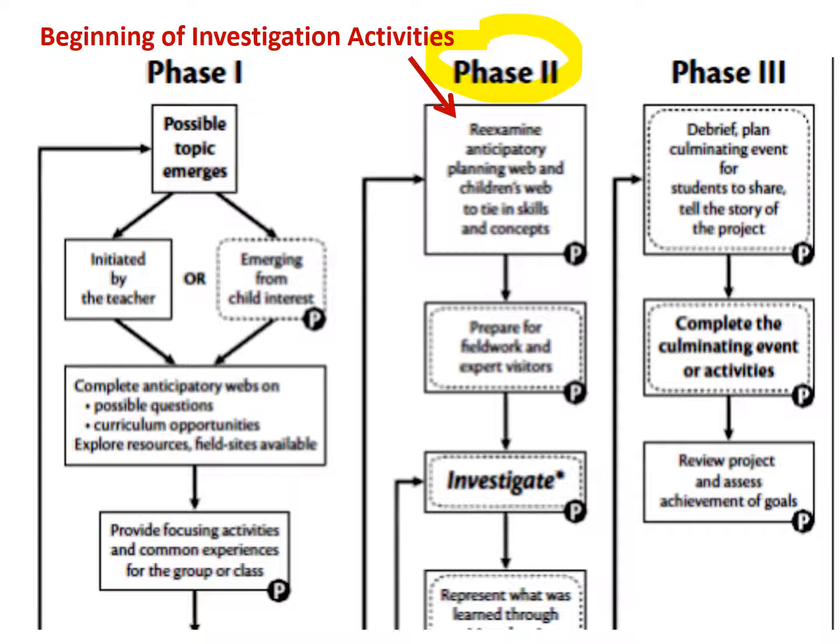I'm going to encourage you to think about the ways that children can investigate. When you explored the Illinois Early Learning Project website, there were multiple examples of projects, and I would encourage you to review those with the lens of looking for how children investigate. What kind of surveys did they do? What kind of observational drawings? What kinds of interactions did they have with experts to find out answers to their questions? What experiments did they try? In one particular project there was a prediction chart where children made predictions and then investigated to find out if their predictions were correct. These are the kinds of experiences that are active, where children are doing rather than being passive listeners.